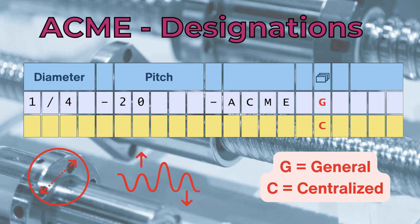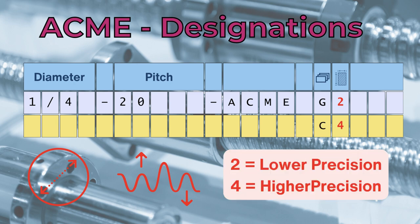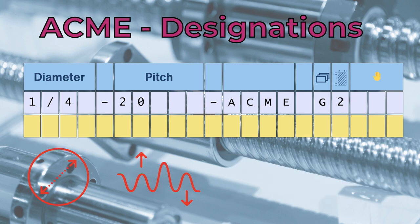Immediately after the series, a digit represents the tolerance class. It can be a number between 2 and 4, where 2 stands for lower precision, and 4 for higher precision. And finally, in the case of a left-hand thread, the description ends with a dash LH.